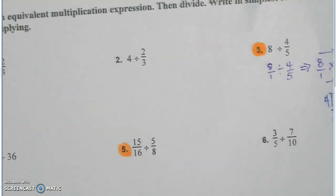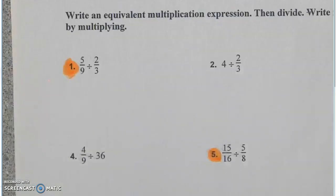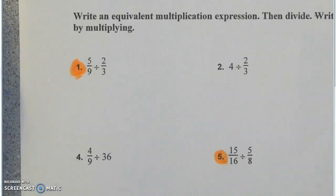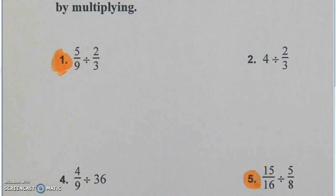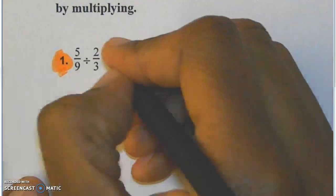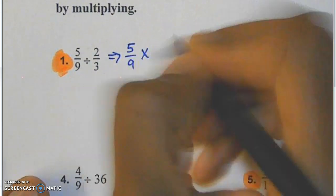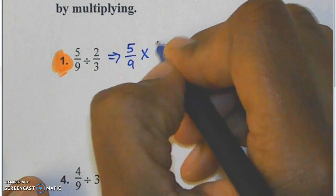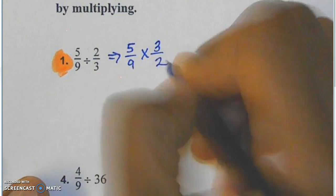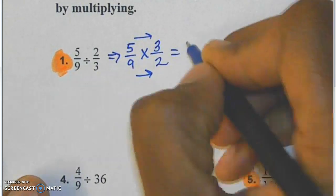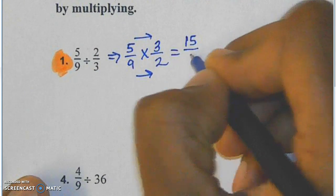Let's look at number one. Number one says five ninths divided by two thirds. Again, we don't divide fractions — we multiply by the reciprocal. So we're going to go ahead and make this a multiplication expression: five ninths times the reciprocal of two thirds, which is three halves. Again we multiply straight across — numerator times numerator, denominator times denominator — to get 15 over 18.